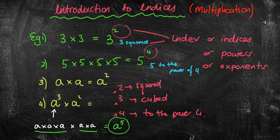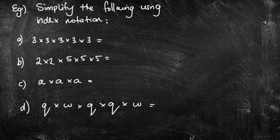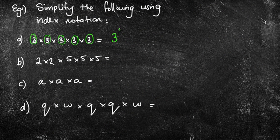At any time, please pause this, write your notes down, and then the next part we're going to come to the questions. Example 1 — we're going to simplify the following using index notation. The first one, we're going to have 3 to the power of something. How many of them do we have? We've got 1, 2, 3, 4, and 5. So I'd say it'd be 3 to the power of 5. That's using index notation — I'm not finding the answer, just using the notation.